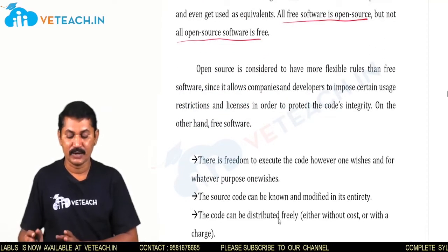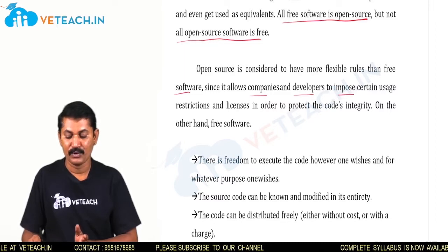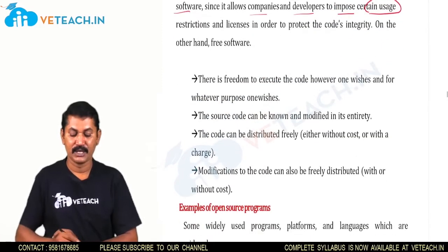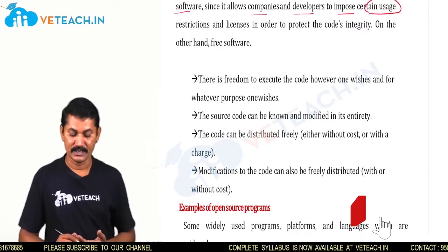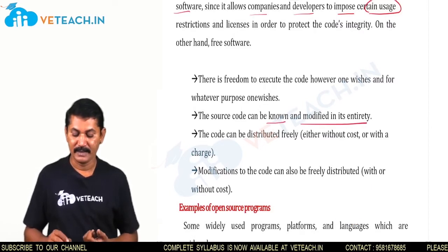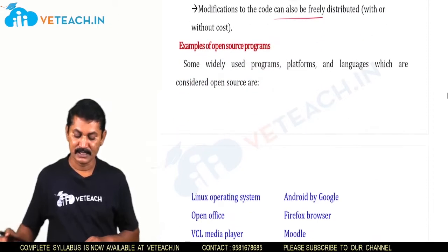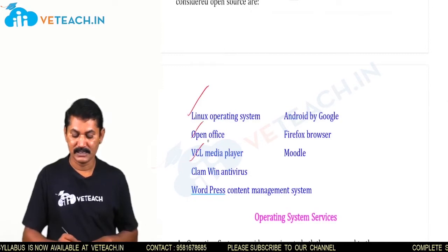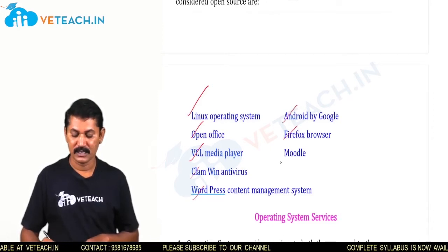Open source is considered to have more flexible rules than free software, since it allows companies and developers to impose certain usage restrictions. There is freedom to execute the code for whatever purpose one wishes. The source code can be known and modified indefinitely, and the code can be distributed freely. Modifications to the code can also be freely made. Examples of open source operating systems include Linux, OpenOffice, VLC, Android by Google, Firefox browser, and Moodle.